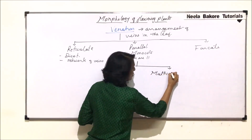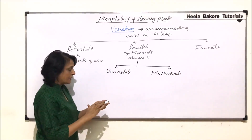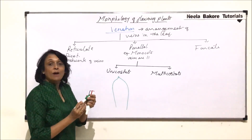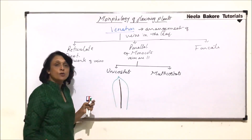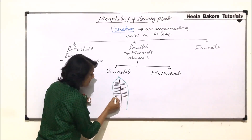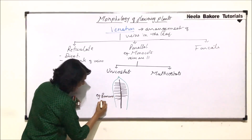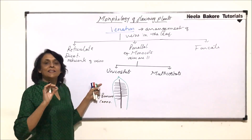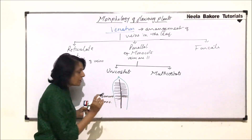It will be called multicostate when there are multiple main veins. In case of unicostate, the leaf is going to have only one main vein, and the branches which arise from this main vein are going to run parallel to each other. The main rib is called the midrib and the branches are parallel, so we don't see any kind of network as was visible in reticulate venation. This is seen in case of banana and canna.